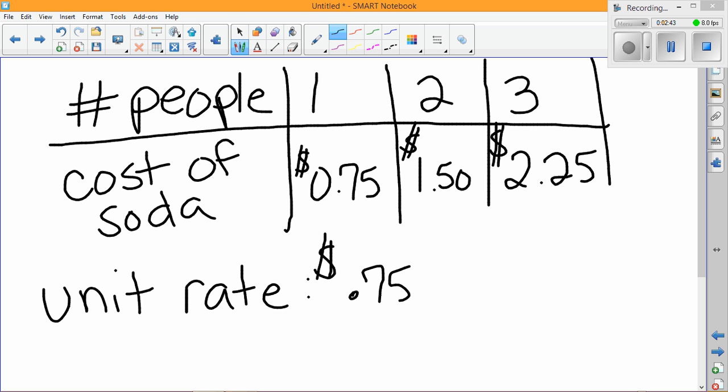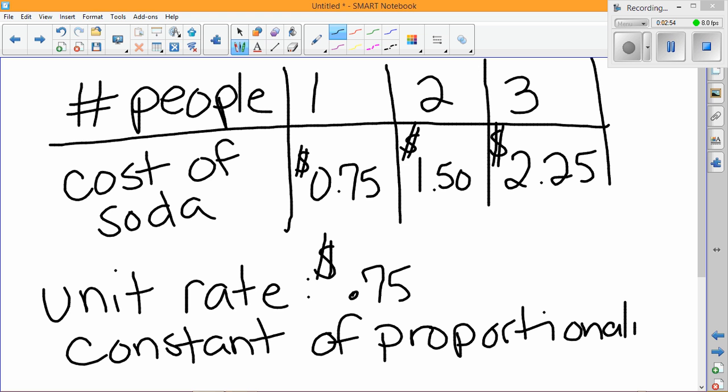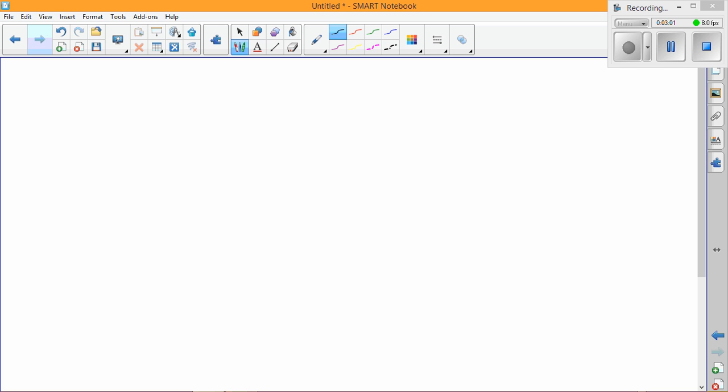Sometimes the constant of proportionality is the same as the unit rate. And all constant of proportionality means is that it fits this equation y = kx. This is a constant, which we've already worked on finding by dividing when we use our tables.